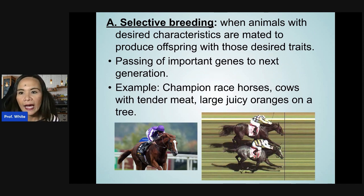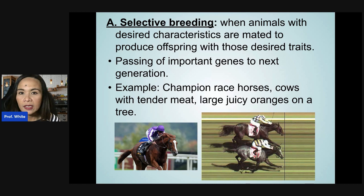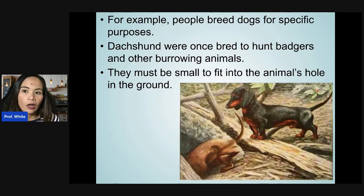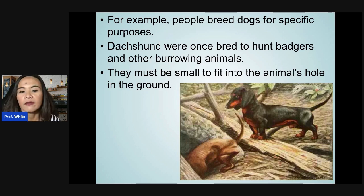Selective breeding is when animals with desired characteristics are mated to produce offspring with those desired traits, passing on important genes to the next generation. For example, champion racehorses, cows with tender meat, or large juicy oranges are selectively bred so the desired trait is passed on. Another example is when people breed dogs for specific purposes — the dachshund was once bred to hunt badgers and other burrowing animals.